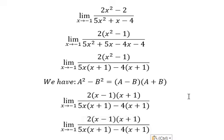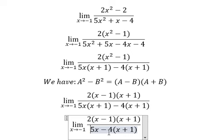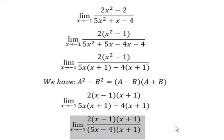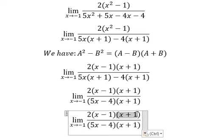Now we can do factorization as 2(x - 1)(x + 1) over 5x(x + 1) - 4(x + 1), and now we simplify (x + 1).